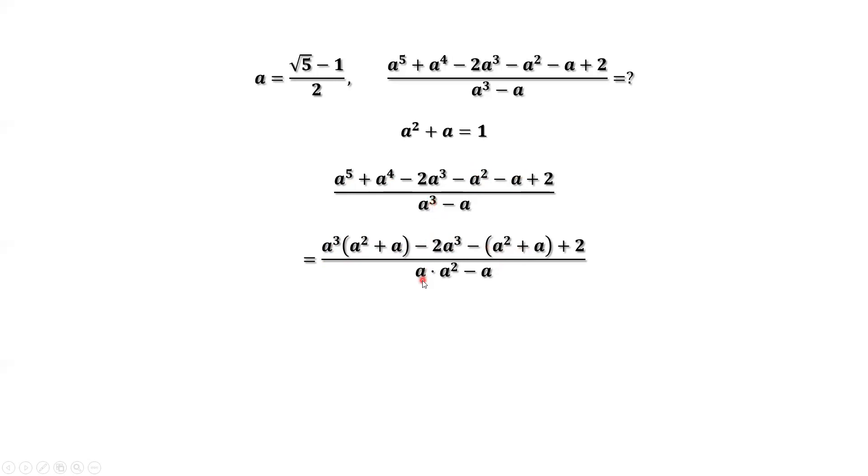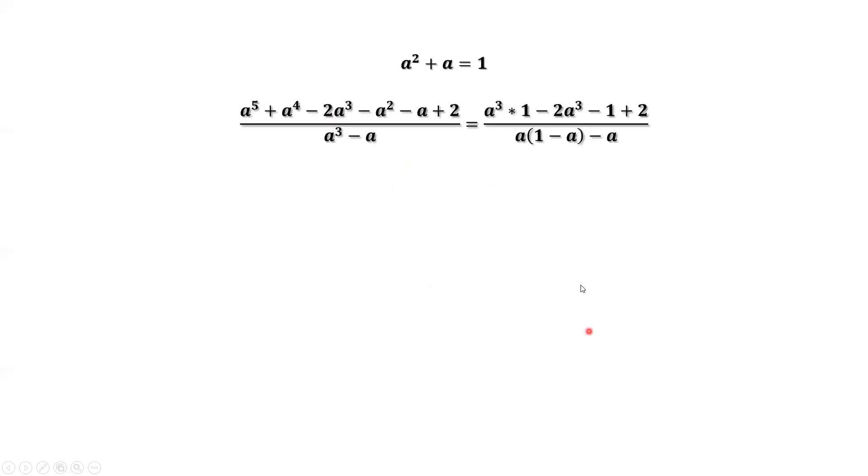a to the power 3 equals a times a squared. We replace a squared plus a by 1. We replace a squared by 1 minus a, giving us 1 minus a to the power 3.